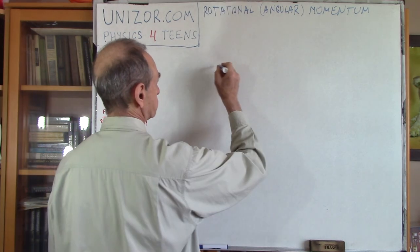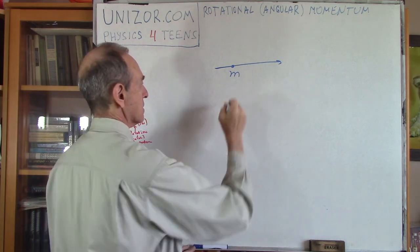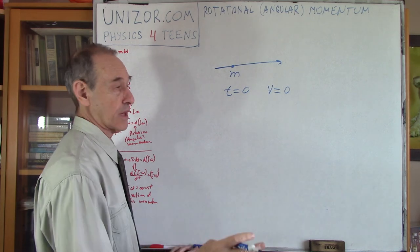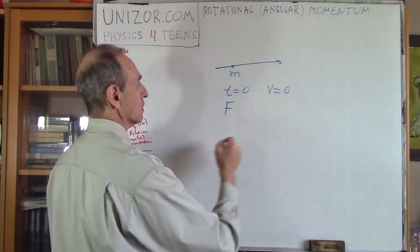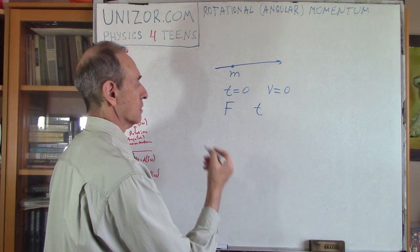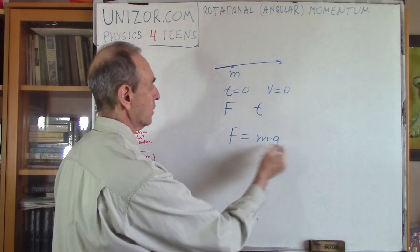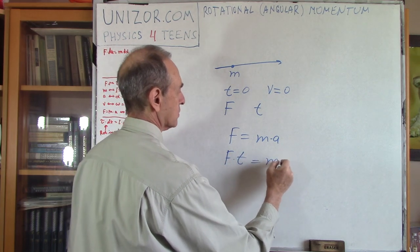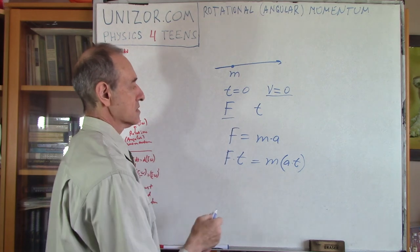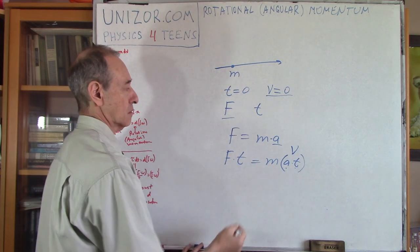If you have a force moving an object M, consider a simple case where at time T equals zero this object has speed equal to zero — it's at rest — and then a constant force acts upon this mass during a certain period of time T. Newton's second law gives us an acceleration, and if we multiply both sides by T, we get F times T equals M times A times T. Since the initial speed was zero and acceleration is constant, A times T equals V at time T, so F times T equals M times V.